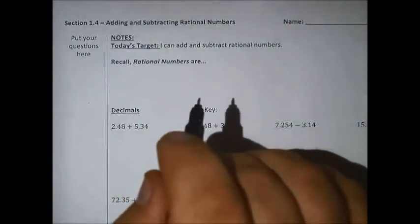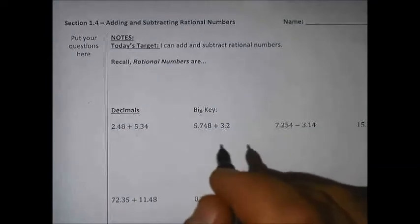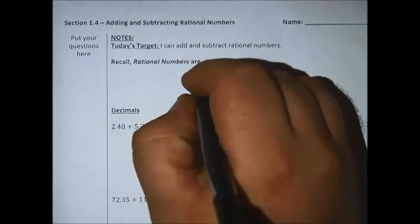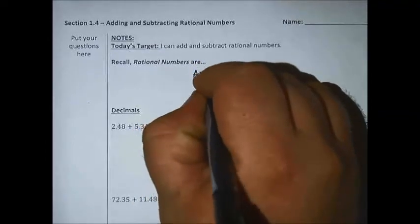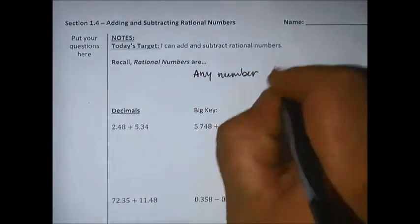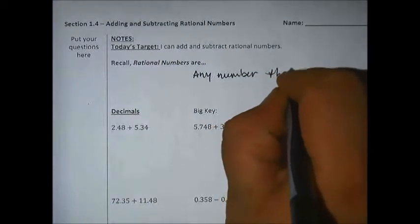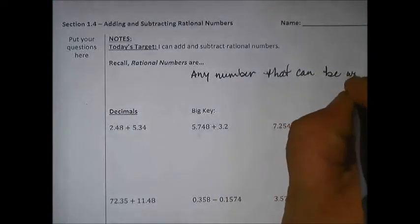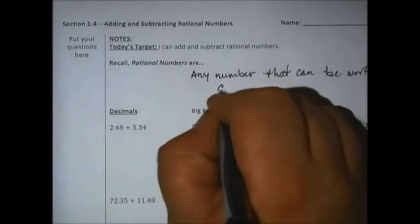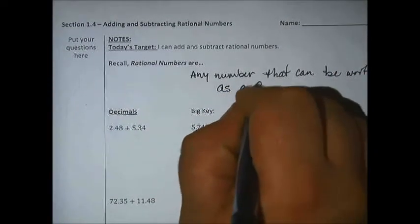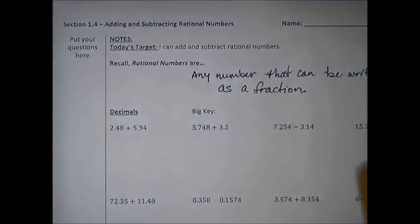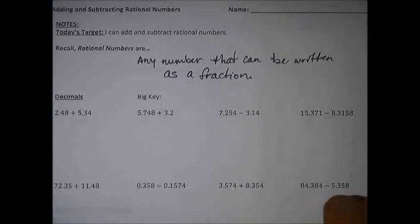Subtracting rational numbers — the target today is simply: I can add and subtract rational numbers. Rational numbers are any number that can be written as a fraction. So any decimal or fraction that we have, we're going to go ahead and call those rational numbers.